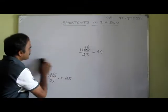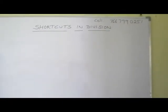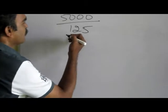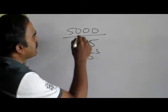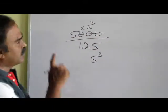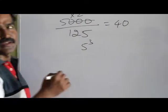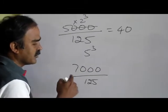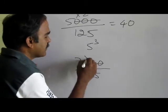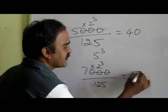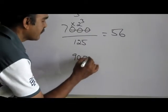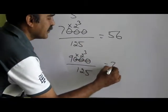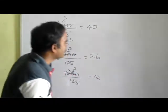We can do a similar thing for dividing by 125. What is 125? It is 5 cubed, so multiply by 2 cubed, which is 8. What is 7000 divided by 125? 7 times 8 is 56. What is 9000 divided by 125? 9 times 8 is 72. This is the fastest method — instead of dividing, we are just using multiplication.